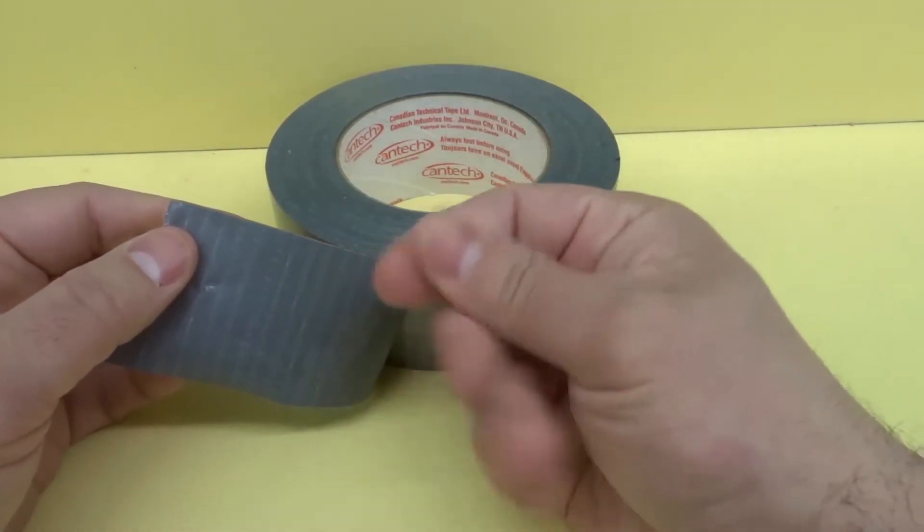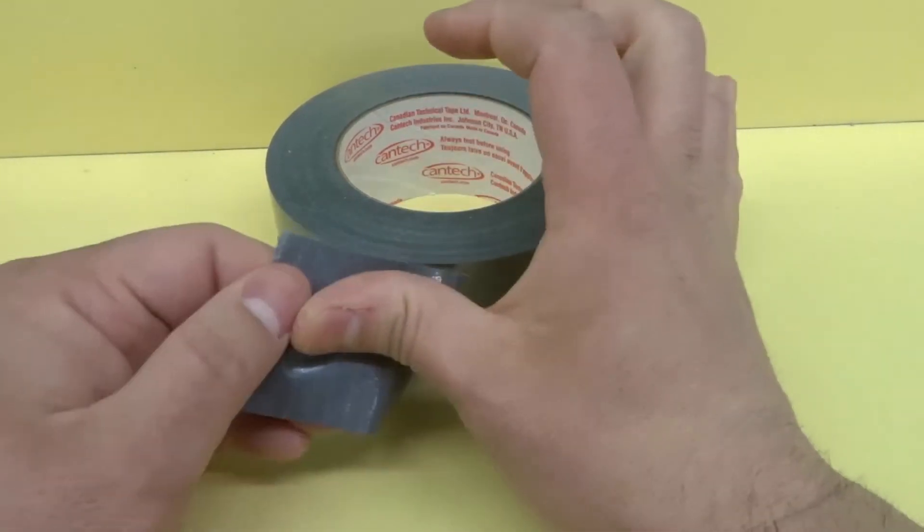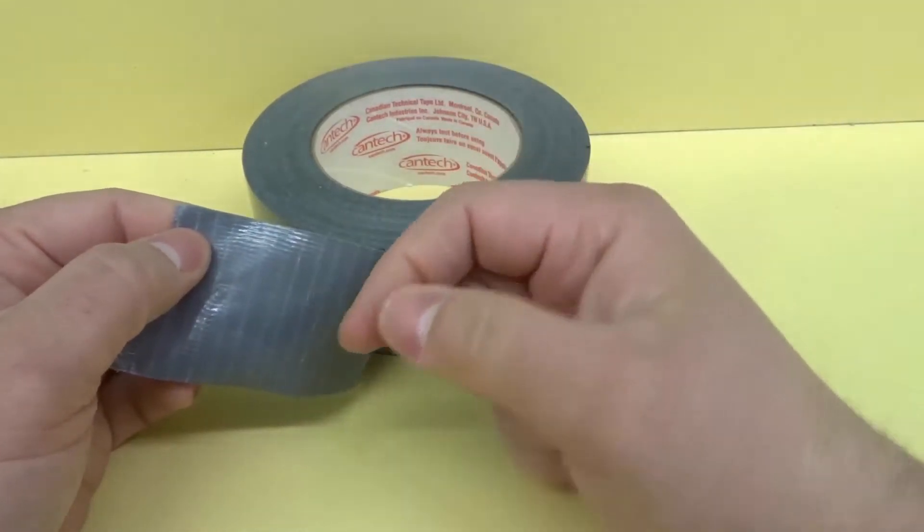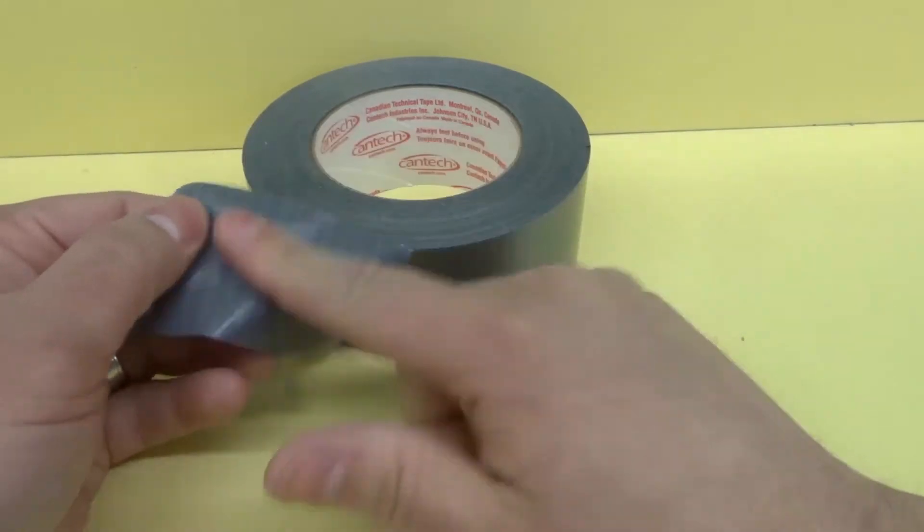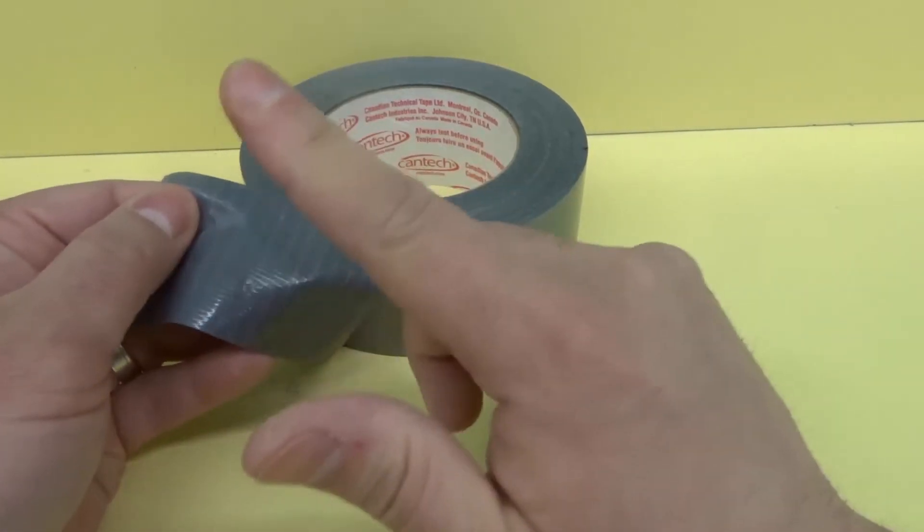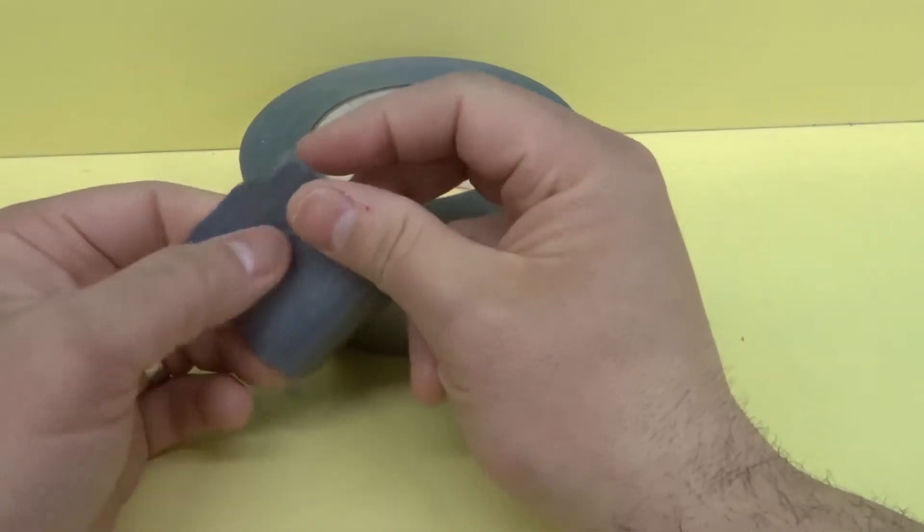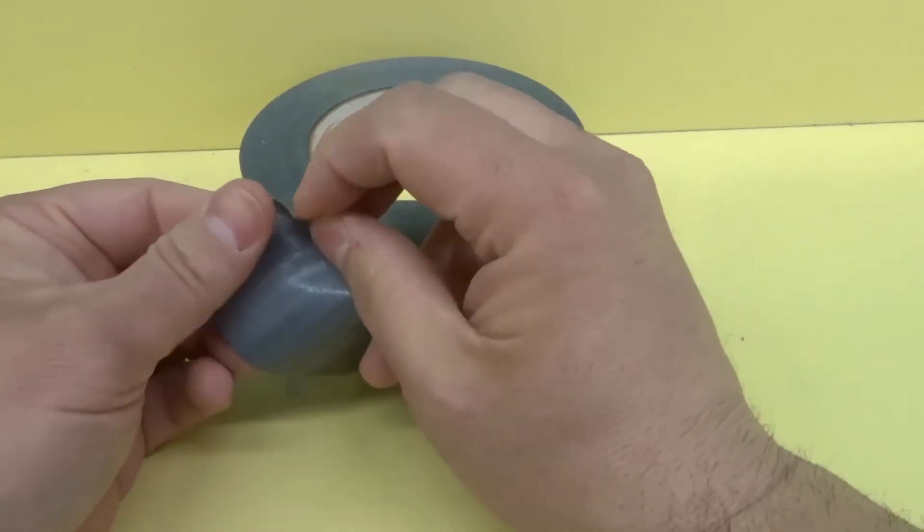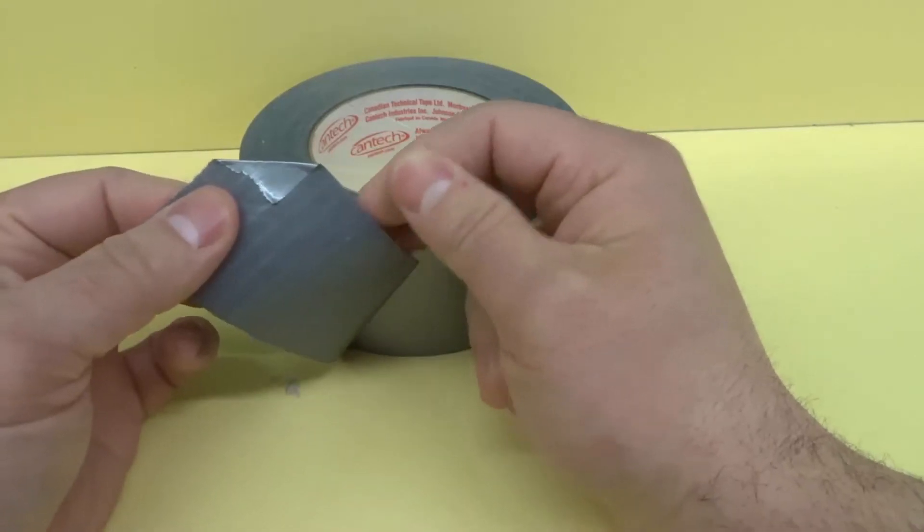So the adhesive is very rubbery. It's a very rubbery substance which makes it super sticky for long periods of time and really just continues adhering over and over. Even if I keep doing this it's just going to keep sticking and it can stick onto itself as well. If I fold this over it's going to stick onto itself and it'll be really hard to get this out.